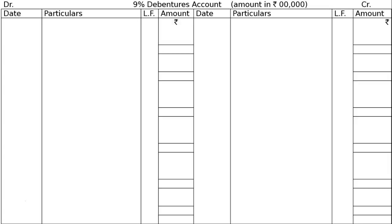We are issuing 1 lakh debentures of Rs 100 each, that is 1 crore. At a discount of 5%, so 1 crore into 5% equals 5 lakhs. The last line tells us to prepare the 9% debentures account from 1st April 2008 till the debentures are redeemed, written in the books of Ananya Limited. The amount is shown in Rs 100,000 units — 5 zeros — and the remainder is placed in the hundreds column.